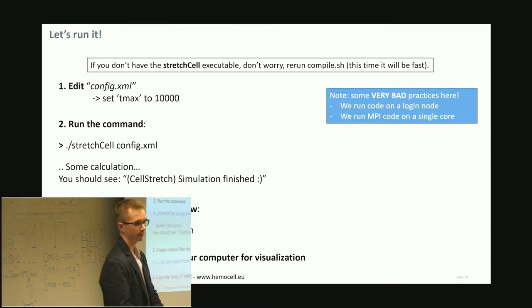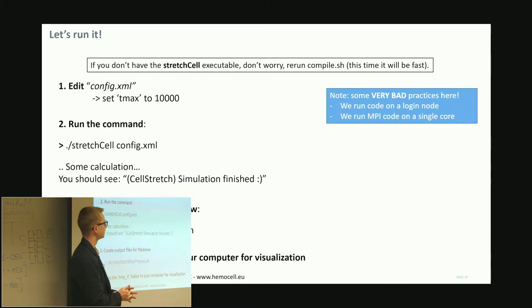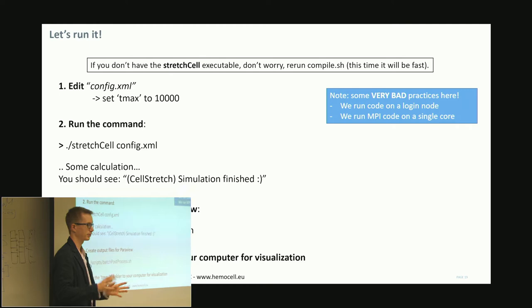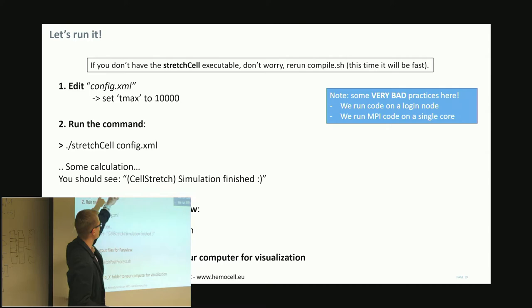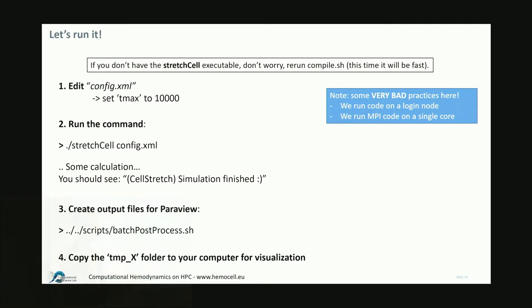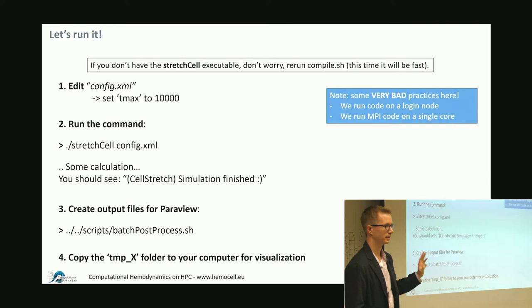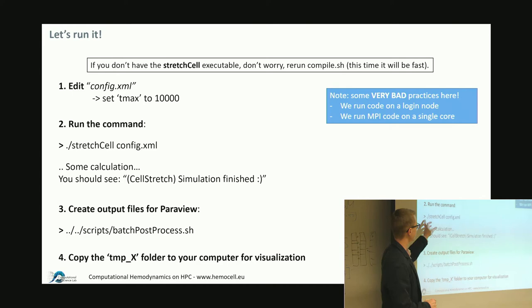To execute the stretch cell simulation — and this is bad practice which I'll explain — go into the stretch cell folder, find the config.xml file that contains all simulation parameters, edit it and set tmax to 10,000 (the maximum number of iterations). Then run the simulation with the provided command. Running actual simulations on the login node is the bad practice; in subsequent parts we will not do this. This is just for simplicity.